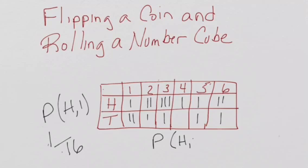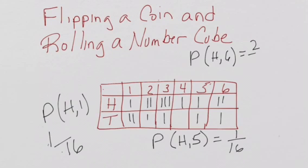let's do heads and 5, would be equal to 1 out of 16. The probability of heads and a 6 would be 2 out of 16 or 1 out of 8.